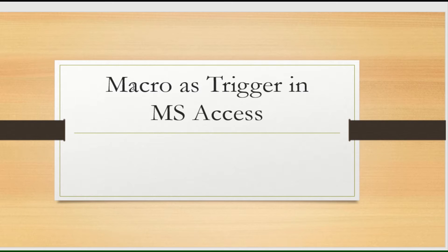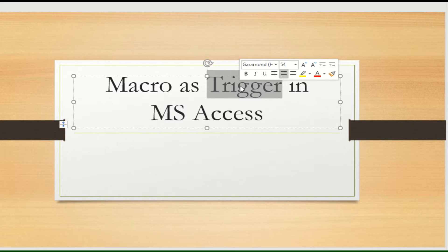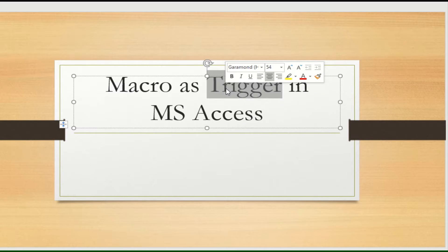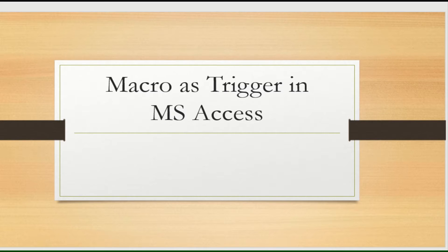Today we are going to talk about macros as triggers in Microsoft Access. A trigger is something which causes another event based on a first event - one event takes place and then another event happens due to that. In Microsoft Access it's not called a trigger but it's called a data macro, whereas in other databases like MySQL, Oracle, SQL Server it's called a trigger.